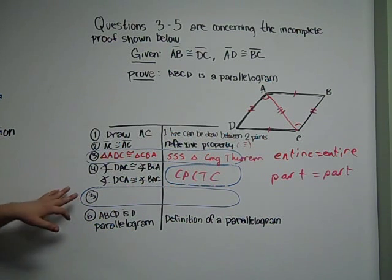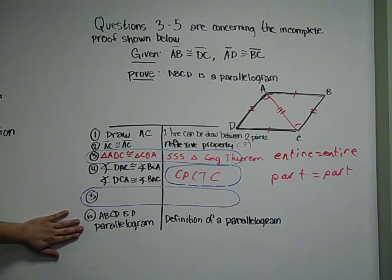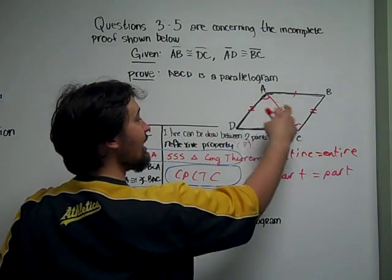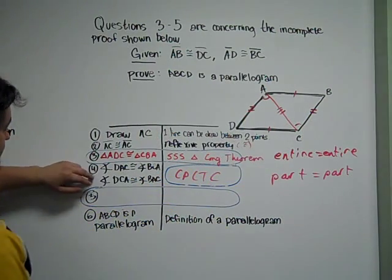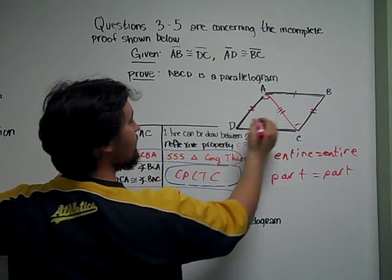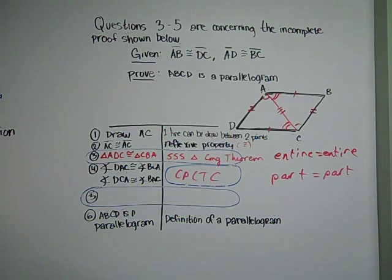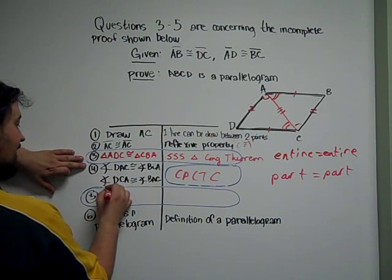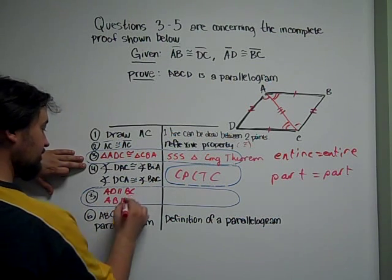Now for number five, the next step is to prove the definition of a parallelogram, and the true definition is that we have two sets of parallel sides. We haven't said anything about parallel sides yet. But now we have one set of angles — angles DCA and BAC — and you see the N-shape developing again. So we now know that AD is parallel to BC, and AB is parallel to DC.